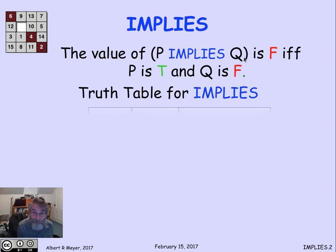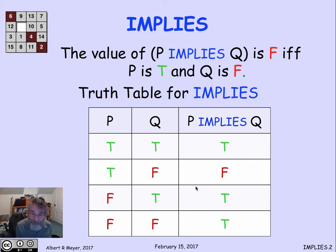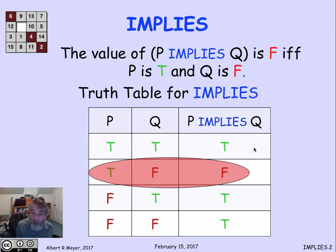Let's look at that as a truth table to see exactly what it means. Here are the four possible pairs of truth values for P and Q. We see that the only place where the implication fails is when P is true and Q is false. Otherwise, it's a true implication.